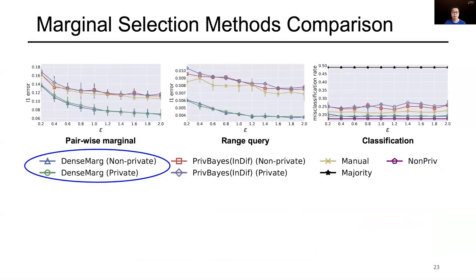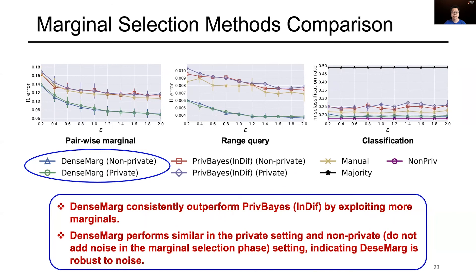This figure shows the comparison of different marginal selection methods. We observe that our proposed method, DenseMark, consistently outperforms PrivBayes by exploiting more marginals. Furthermore, DenseMark performs similarly in the private setting and the non-private setting that does not add noise in the marginal selection phase, which indicates DenseMark is robust to noise.